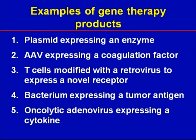Bacteria can be engineered to act as a vaccine that stimulates the immune system to attack tumors. Replication-competent viruses may also be used as biologics that replicate in and kill tumor cells. If the virus expresses a foreign gene, it's considered a gene therapy. If it doesn't express a foreign gene, it's not a gene therapy, but it's still regulated by the Office of Cellular, Tissue, and Gene Therapies.